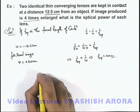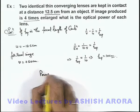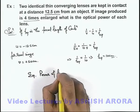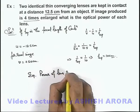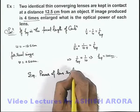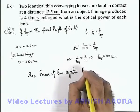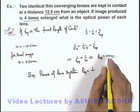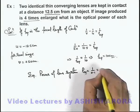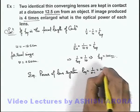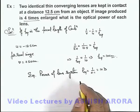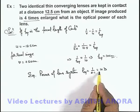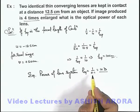So if we calculate the equivalent power of the lens system, this equivalent power can be written as 1 divided by the focal length in meters. The focal length is 0.1 meters, so the equivalent power is 10 diopters.